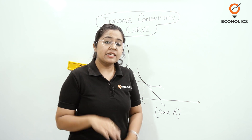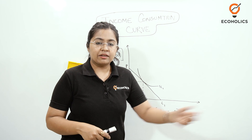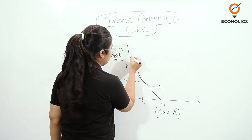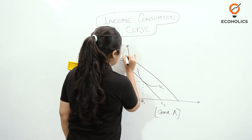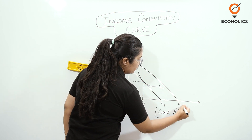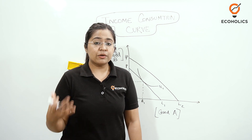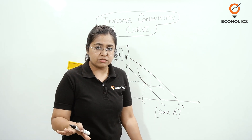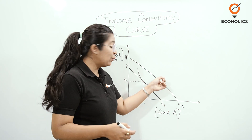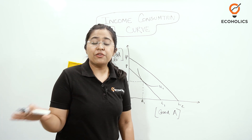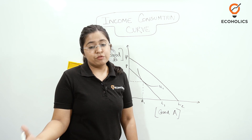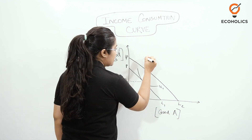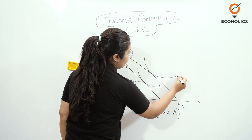Now let's say the budget line changes because of an increase in income — for example, in two or three years the person has received a salary increment. The new price line or budget line is PL2. With this new price line, and with no change in commodity prices, the consumer has more monetary or real income to dispose of and can now purchase more quantities of the same commodities. So a new indifference curve IC2 is formed.